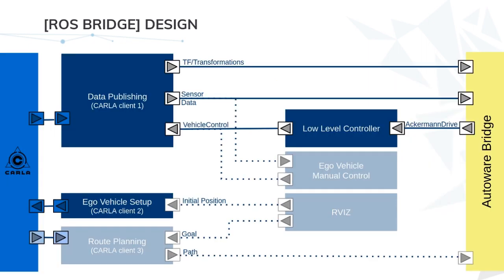Let's take a closer look at the ROS bridge to see which nodes are actually being executed when running Autoware and Carla together. The boxes or nodes colored in transparent blue are optional, whereas the others are mandatory. I will give a quick explanation of each node to provide a general picture of the whole configuration, and then explain the most important ones in more detail.